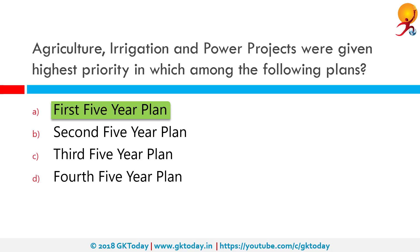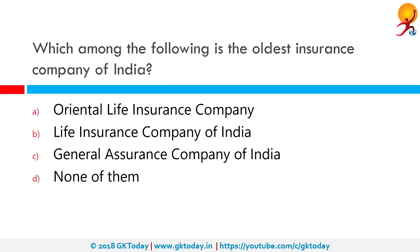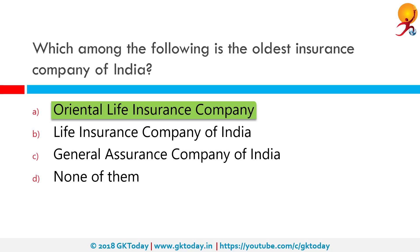Which among the following is the oldest insurance company of India? The correct answer is the Oriental Life Insurance Company. The Oriental Life Insurance Company was the first life insurance company in India, established in Calcutta in 1818, though it failed in 1834.